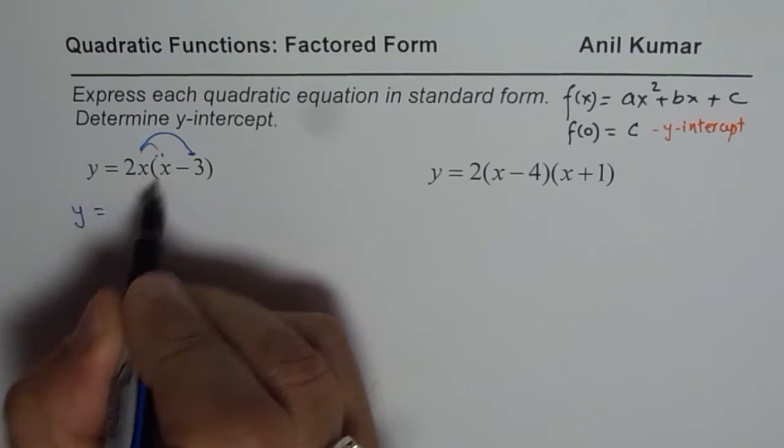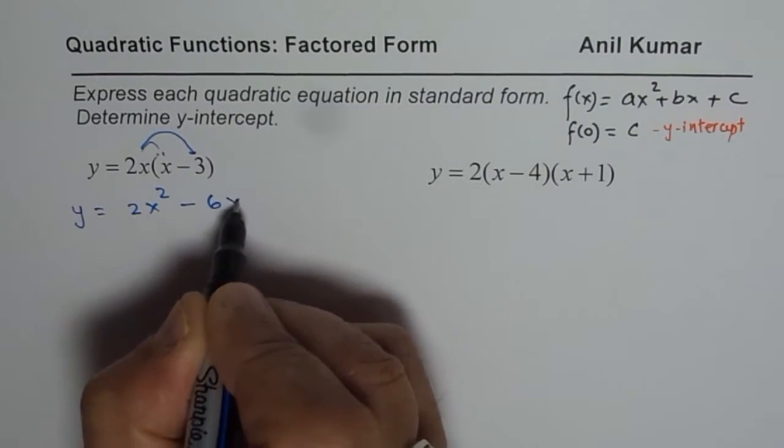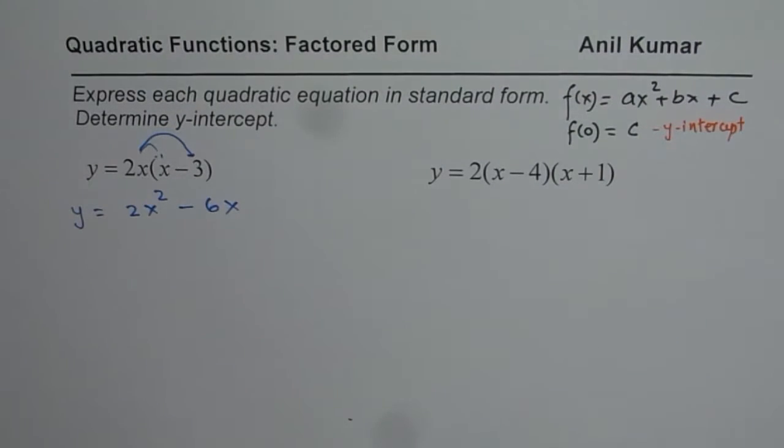So 2x times x gives you 2x² and with minus 3, minus 6x. So that is the equation in standard form.